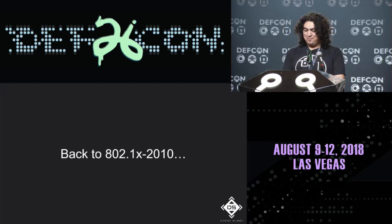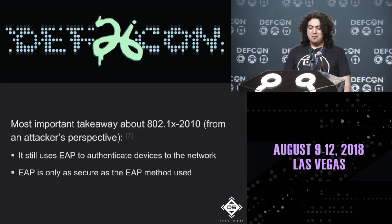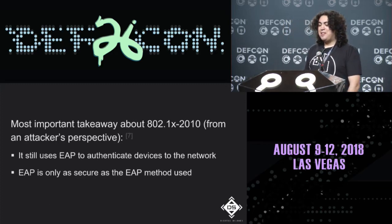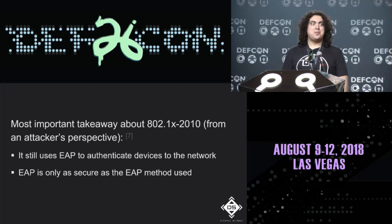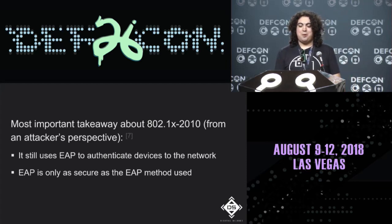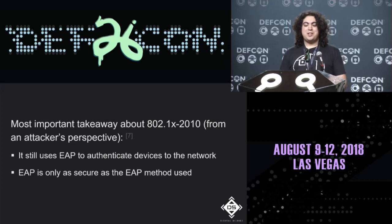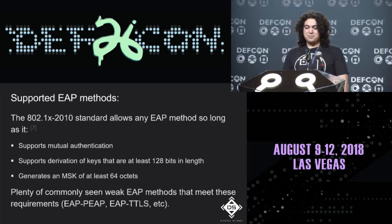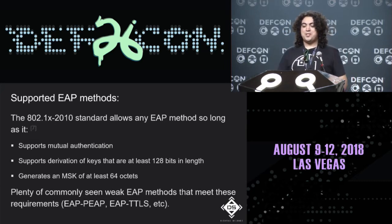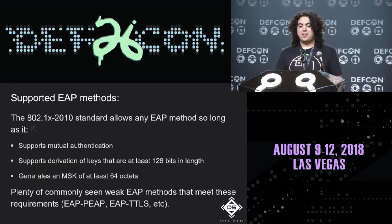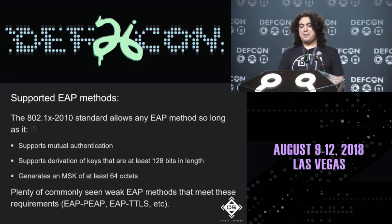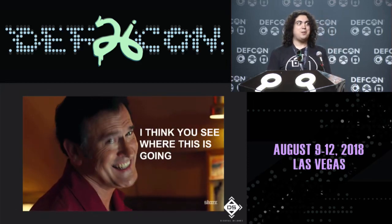Back to 802.1X-2010: the most important takeaway from an attacker's perspective is that it still uses EAP for authentication, and EAP is only as secure as the EAP method used. The 802.1X-2010 standard allows any EAP method so long as it supports mutual authentication, derives keys at least 128 bits long, and generates an MSK of at least 64 octets. Many commonly seen weak EAP methods — including EAP-PEAP and EAP-TTLS — meet these requirements.